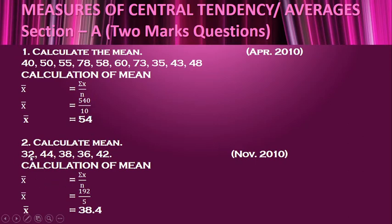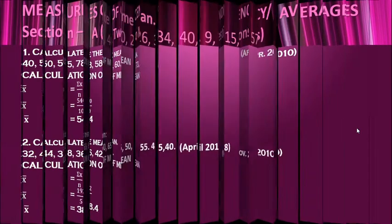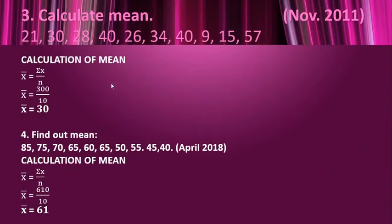In this situation, we have 5 values. So n is 5 and the total of x, that is σx, is 192. So x̄ is 192 / 5, which comes to 38.4.